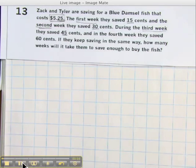Zach and Tyler are saving for a blue damsel fish that cost $5.25. The first week, they were able to save $0.15. The second week, they saved $0.30. During the third week, they saved $0.45. And the fourth week, they saved $0.60. If they continue saving in the same way, how many weeks will it take them to save enough to buy the fish?